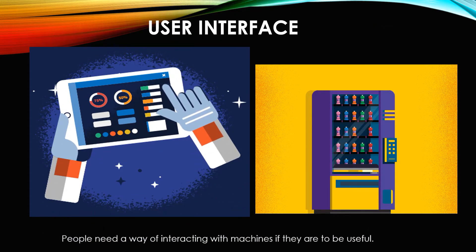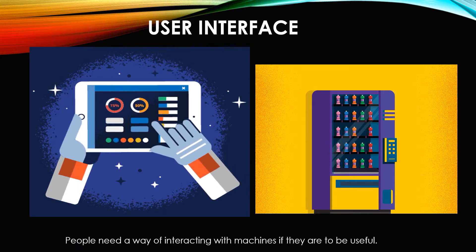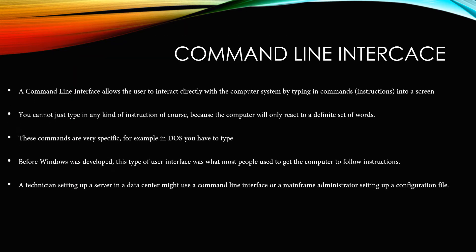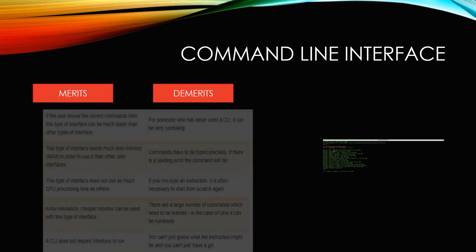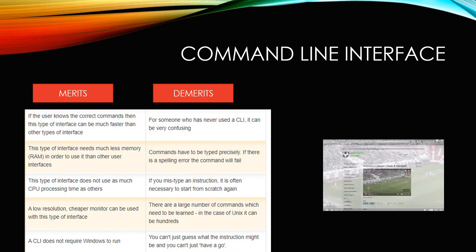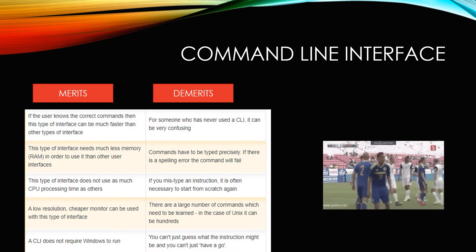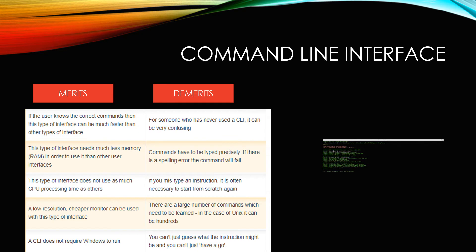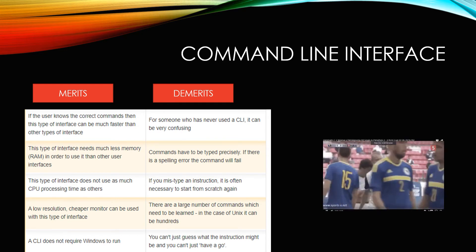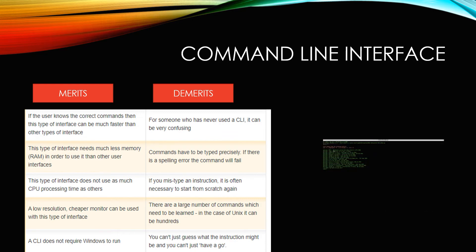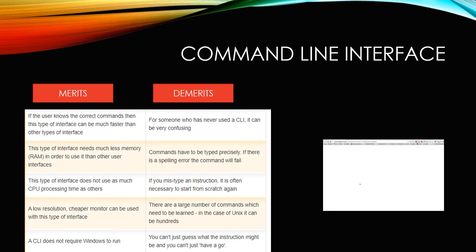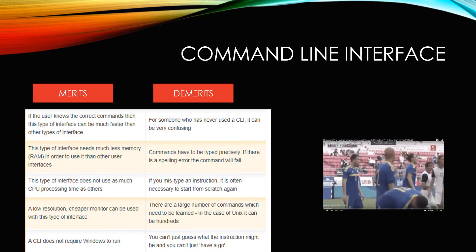In order to communicate with the system, we need to know what type of interface we use. First is command-line interface. In order to communicate with the system, the programmer must know about the commands. This type of interface uses the operating system and can only be communicated with commands. Those who are not aware of command-line interface will find it very confusing to use. This type of interface will occupy less memory and less processing power.